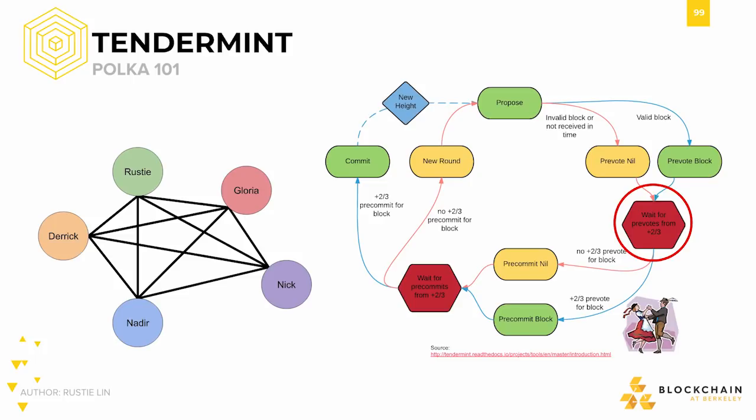Then the next step is pre-commit. If a validator witnesses a two-thirds pre-vote for the block from the network and pre-voted for the block, then it pre-commits the block. Otherwise, if the validator pre-voted nil previously because the block was invalid or they simply didn't pre-vote in time, then the validator pre-commits nil. If two-thirds of validators pre-commit the block, then the block is committed. Else, a new voting round starts.